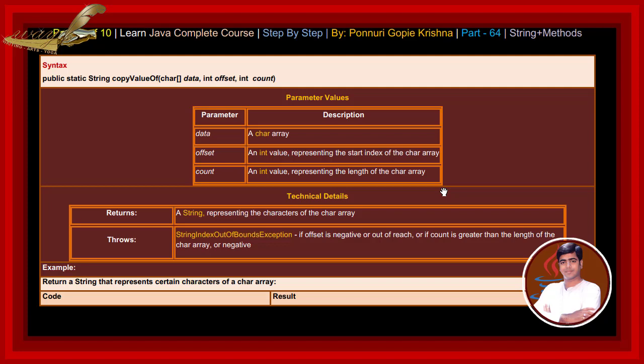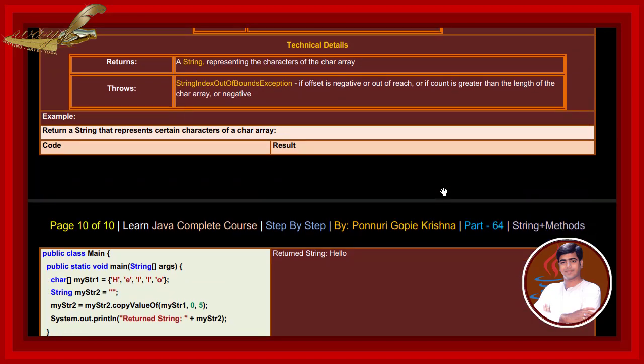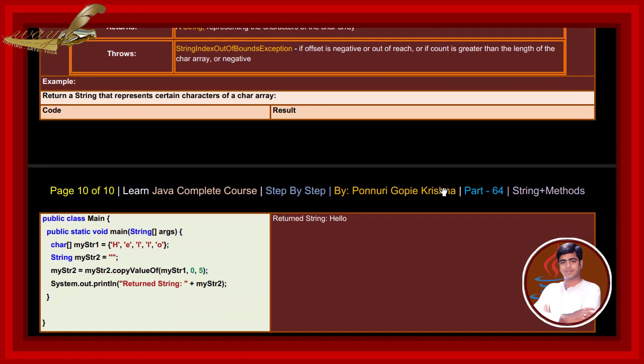Technical details: returns a string representing the characters of the char array. Throws StringIndexOutOfBoundsException if offset is negative or out of reach, or if count is greater than the length of the character array or negative. For example, returning a string that represents certain characters of a char array — if we write and execute this code, the output result returns the string 'hello'.